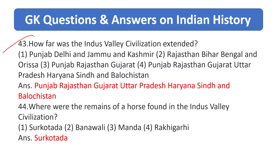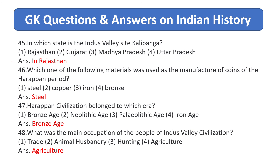How far was the Indus Valley civilization extended? Answer is Punjab, Rajasthan, Gujarat, Uttar Pradesh, Haryana, Sindh, and Balochistan. Where were the remains of horse found in the Indus Valley civilization? Answer is Surkotada.